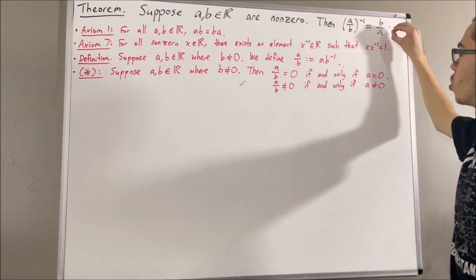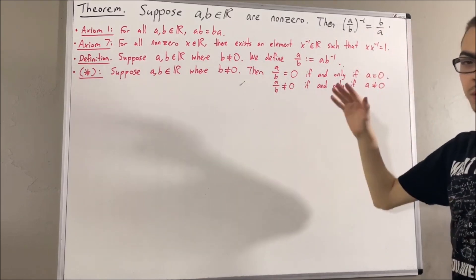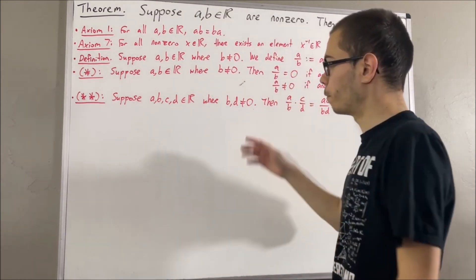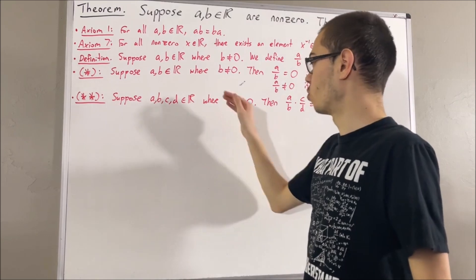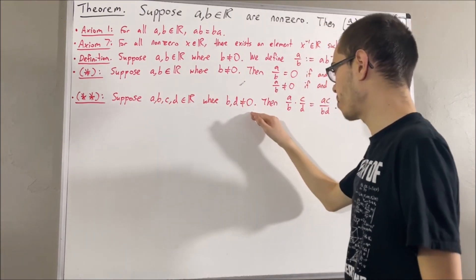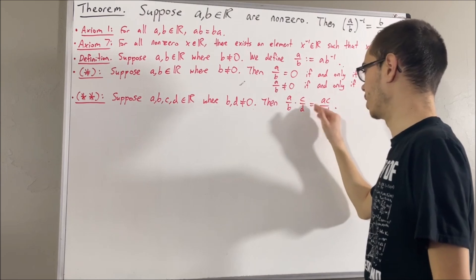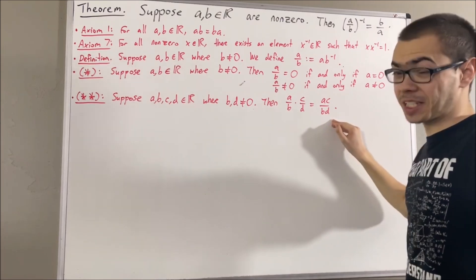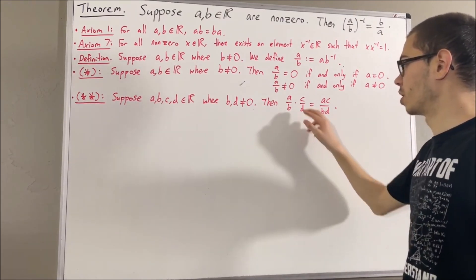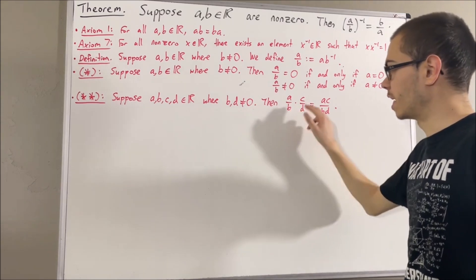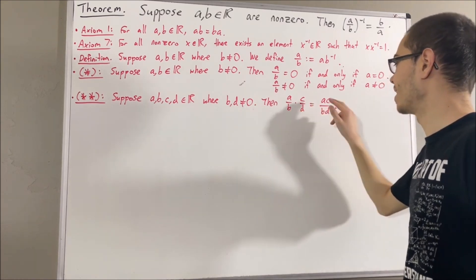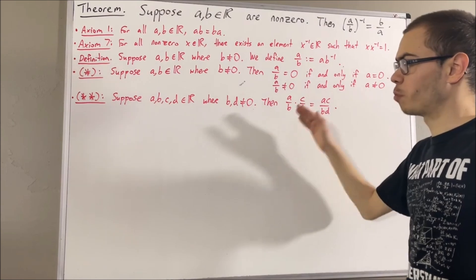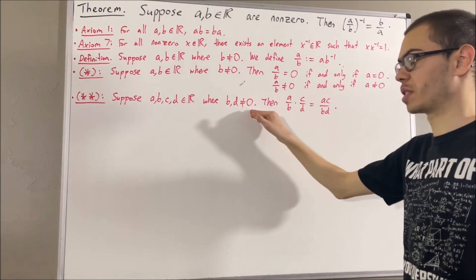Now, to prove this, we're also going to be using some other preliminary results. If we are given real numbers A, B, C, and D where B and D are non-zero, then A over B times C over D is equal to AC over BD. Now, we're able to make sense out of this expression because in A over B, we know B is non-zero; in C over D, we know D is non-zero; and in AC over BD, we know BD is non-zero — because we have proven that the product of two non-zero real numbers is a non-zero real number.